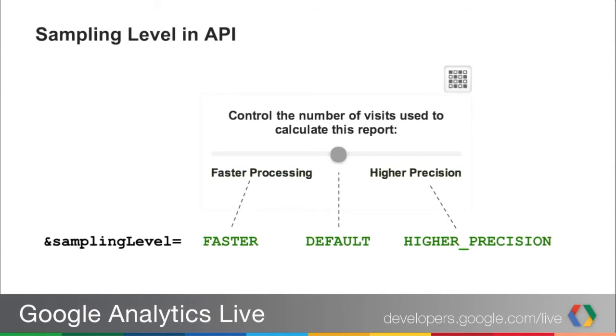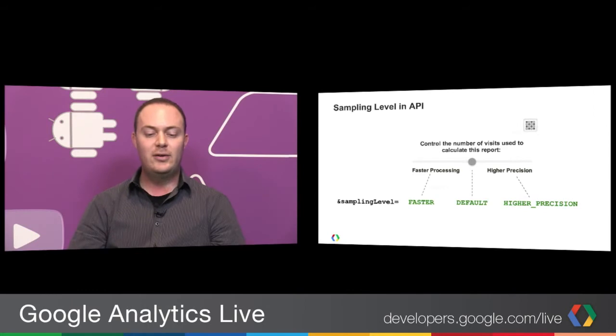You can also set it to faster or higher precision. We get a lot of questions from people about their queries not matching the results they see in the web interface. There are usually two main reasons: either the actual query is a little different — some queries in the UI cannot be reproduced through the API — or the reason is the sampling level. Prior to this parameter being available, there was really no way to set the sampling level in the Core Reporting API, making it harder to match the web interface. This brings it back into parity.